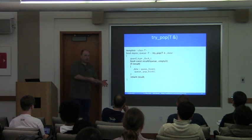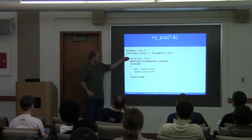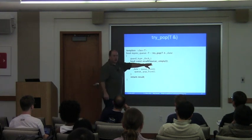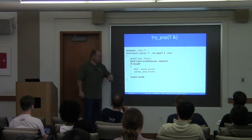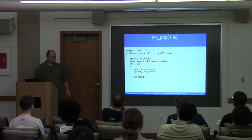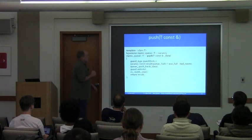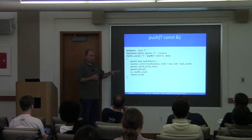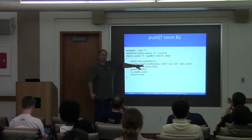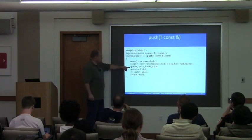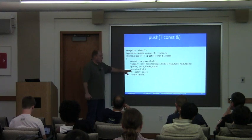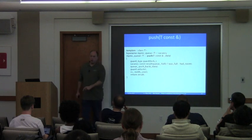Try_pop either immediately succeeds or immediately fails — no blocking. We grab our lock, check whether it's empty. If not empty, we return true; we take from the front. Push is going to push onto the queue and eject the oldest element. We grab our lock, ask whether the queue is full, and set the return value accordingly. We push_back — the circular buffer ejects the oldest element. Then I release the unique_lock and call notify_one on the condition variable, because pop is waiting on it when the queue is empty.